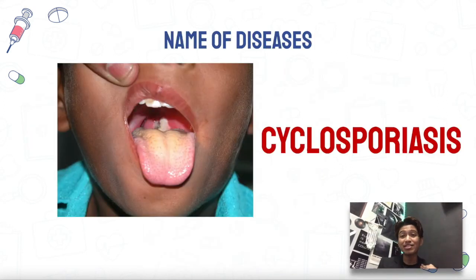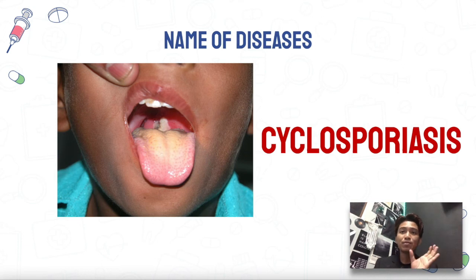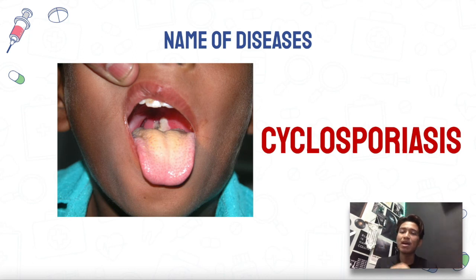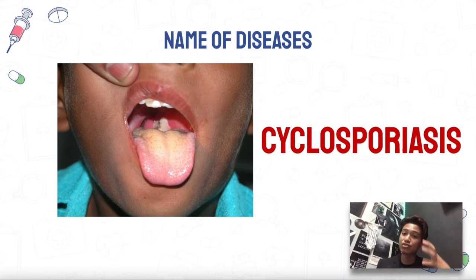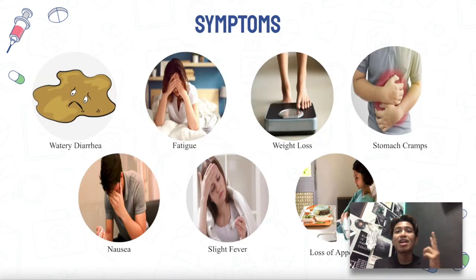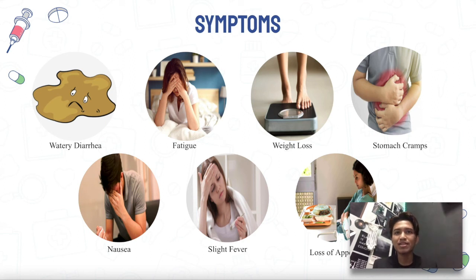My name is Muhammad Zakir Iman bin Zulkifli and I will present the last part on this organism. The disease caused by Cyclospora cayetanensis is called cyclosporiasis, an intestinal illness. Cyclosporiasis is generally transmitted when feces contaminate food or water that is consumed. Symptoms include watery diarrhea, stomach cramps, loss of appetite, weight loss, slight fever, nausea, and fatigue. If left untreated, the infection can last a month or more, leading to dehydration and potentially death.